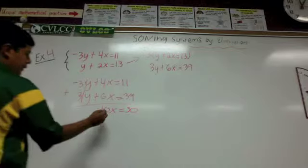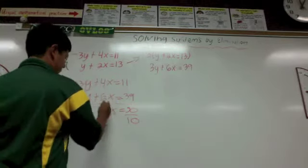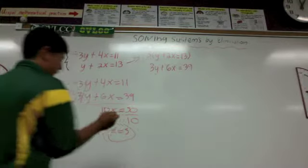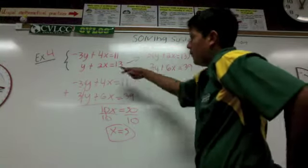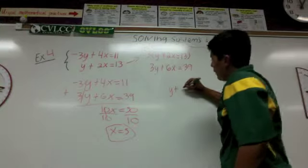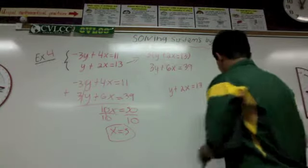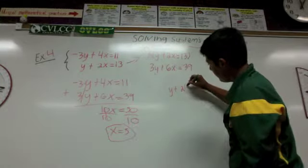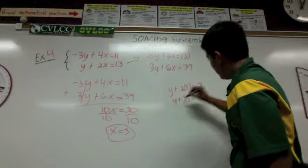6x plus 4x is 10x equals 50. So dividing both sides by 10 we get x equals 5. Now after we've got our x, we're going to plug it into the second equation, the original one, because it's easier. So it's going to be y plus 2 times 5 equals 13.